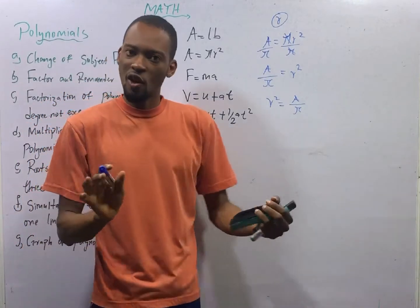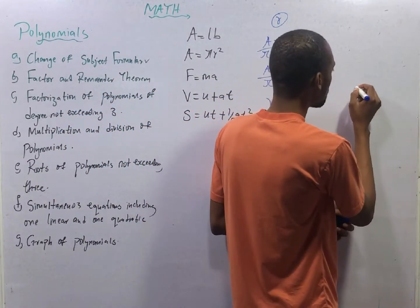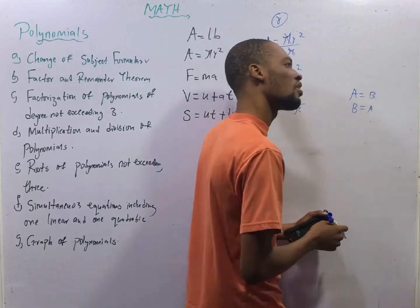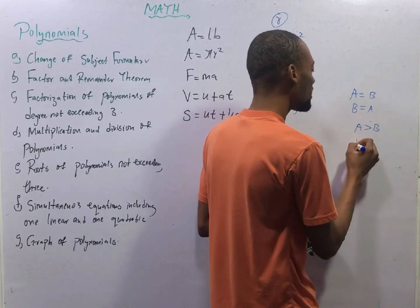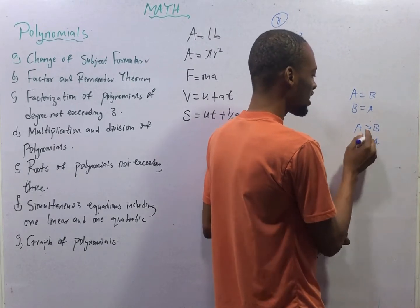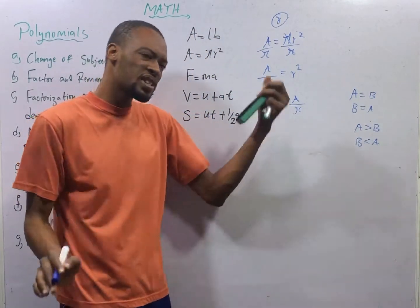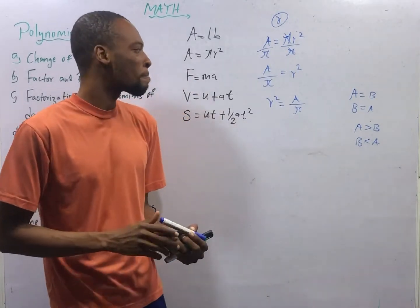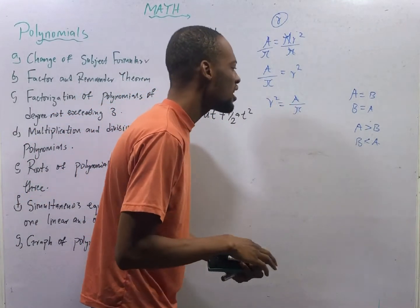If A over π equals R squared, it means that R squared is A over π. Equality or equations are different from inequality. For equations, if A equals B, it means that B is also equals A. However, for inequality, if A is greater than B, it does not mean that B is greater than A. Instead, B is lesser than A. When you reverse the order of expression in inequality, then the sign will reverse as well.